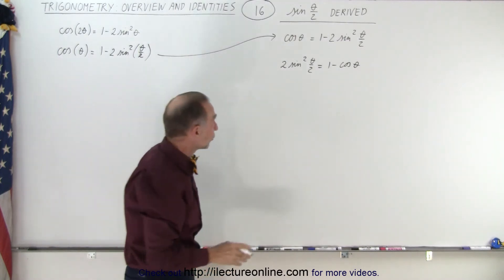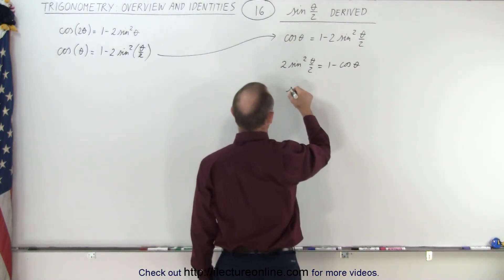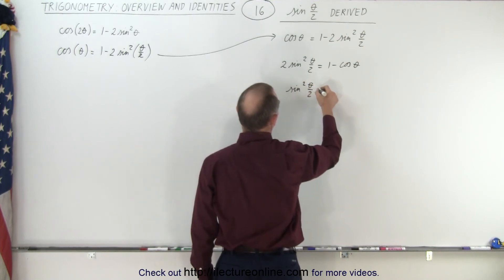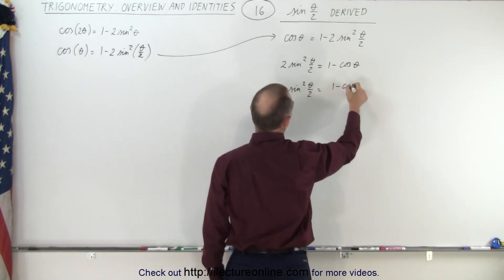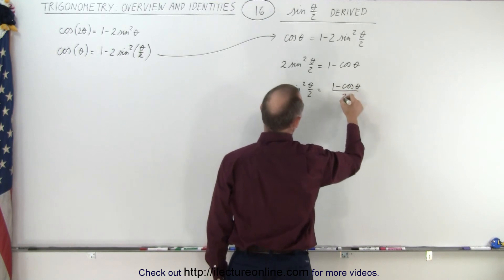And then we divide both sides by 2. So now we end up with the sine squared of theta over 2 is equal to 1 minus the cosine of theta divided by 2.